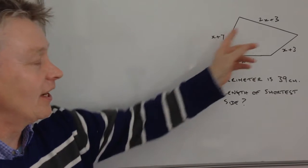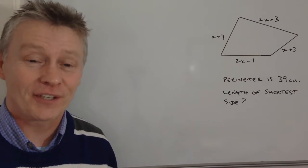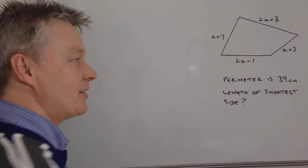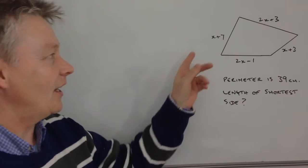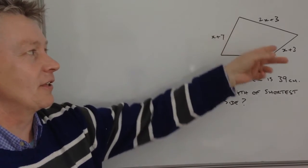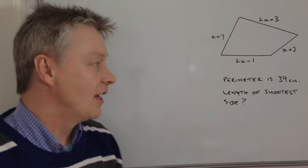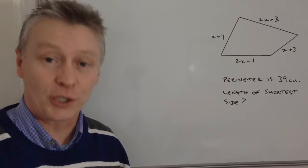This particular shape is a quadrilateral, which is a four-sided shape. We've been told that the perimeter is 39 centimeters, and we've got these measurements that involve X on each of the sides, and we've been asked to work out the length of the shortest side.